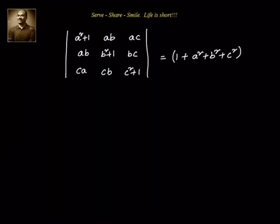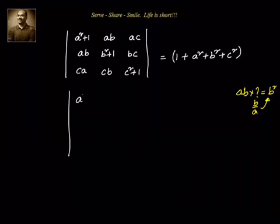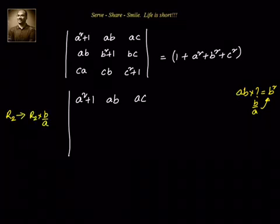So it is a little bit lengthy but we will try to solve this way. What I will do is multiply the second row: to convert ab into b², I need to multiply by b/a, then only it will become b². So first we write down the matrix with a² + 1, ab, ac in the first row. Then R2 is assigned R2 × (b/a) and R3 is assigned R3 × (c/a).